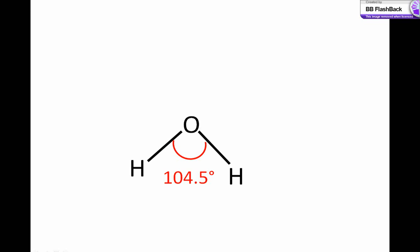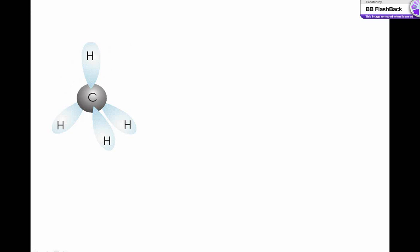One thing to note is that for every non-bonding pair of electrons that are present, the bond angle is reduced by 2.5 degrees. That is, with methane, no non-bonding electrons present, so the bond angles are 109.5 degrees. With ammonia, there is one pair of non-bonding electrons, so the bond angle is reduced by 2.5 degrees to 107 degrees.